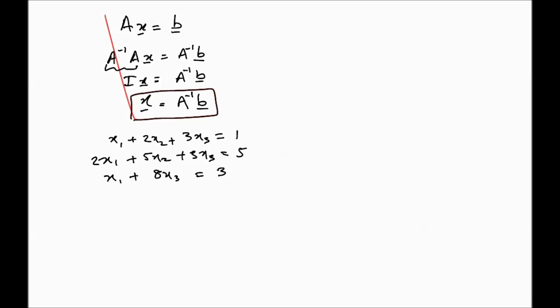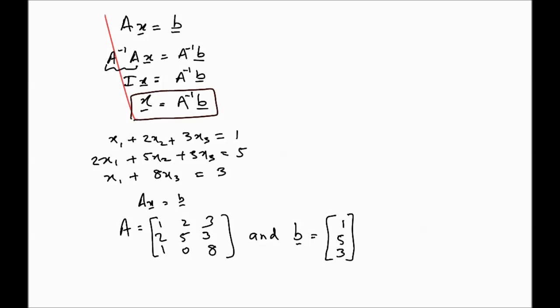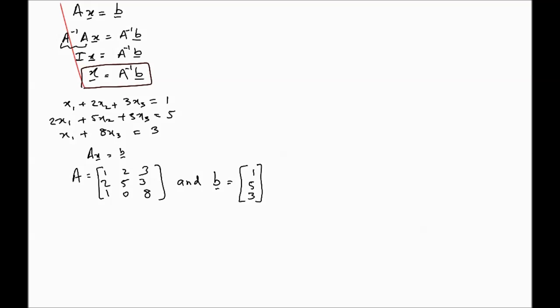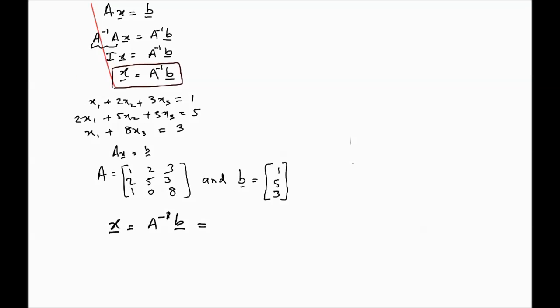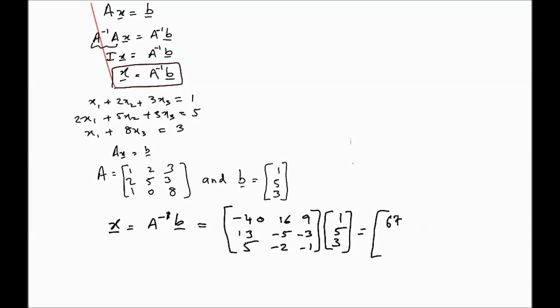Let's do a quick example. Given a system of equations, we write it as Ax = b, where A is the coefficient matrix — which is in fact the same matrix we just found the inverse of — and b is the right-hand side. Since x = A-inverse times b, we simply multiply the inverse we already calculated by the right-hand side. Multiplying through, we end up with the result: x equals 67, -21, and -8. You can verify this by substituting back into the original equations.